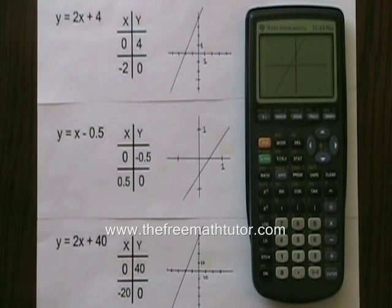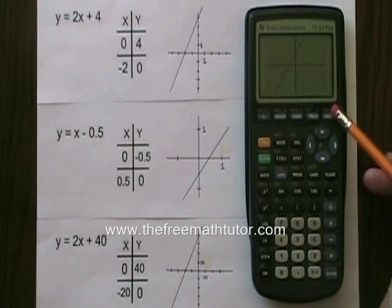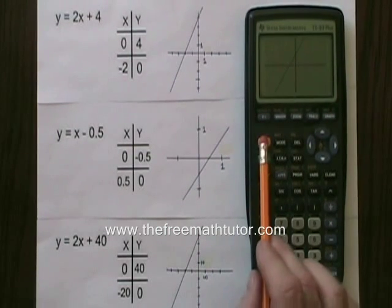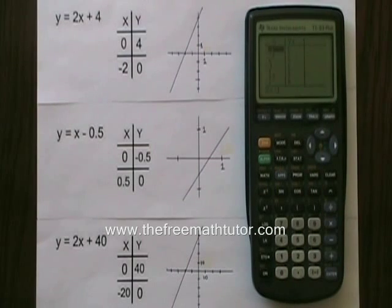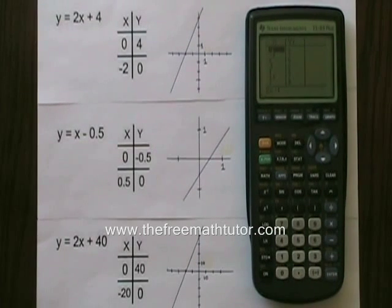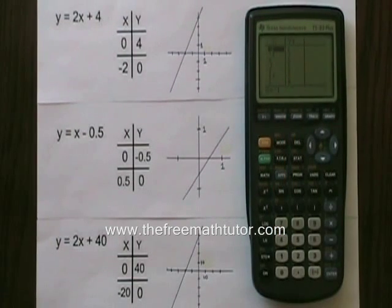Now I would like to see a table of values for this linear equation. The word table is in yellow above the graph button, so that means if I press second graph, I can see a table of values for this equation. And I can see my y-intercept on the table. It says 0, 4.